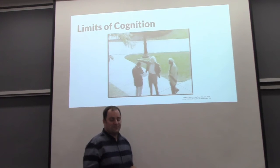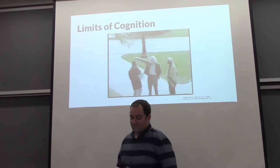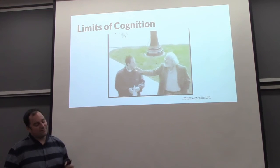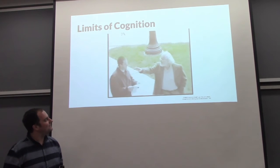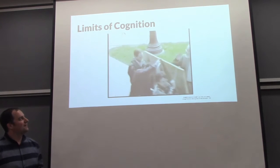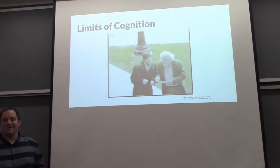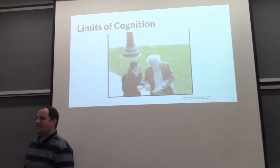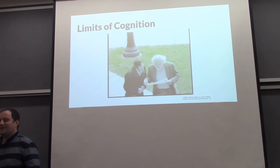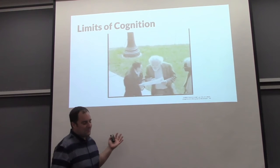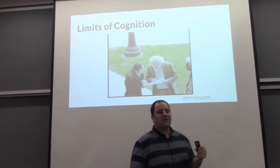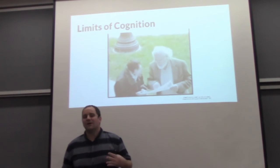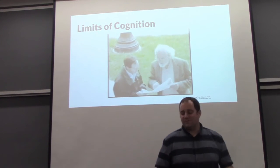There are also inherent limits of our cognition. From a psychology paper: a person is so preoccupied with the task of explaining directions that he doesn't even notice he's talking to a completely different person than he started with. We have certain shortcomings in our visual system and in how our brain works, and we have to be aware of those limitations when we design visualizations.